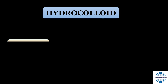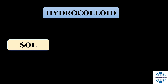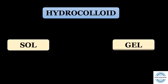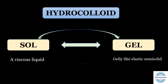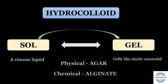In a hydrocolloid, the colloid particles spread throughout the water. Depending on the quantity of water available, it can take a sol form or a gel form. The sol form is a solution or more or less viscous liquid, while the gel form is a jelly-like consistency — an elastic semi-solid. The impression material is introduced into the mouth as a sol and when it converts into a gel, it is removed. This conversion of sol to gel can be physical, like the change in temperature in agar — that is why it is reversible — or it can be a chemical reaction as in alginate, which is why it is the irreversible hydrocolloid.